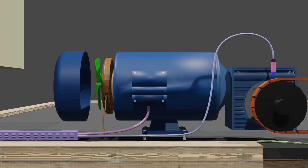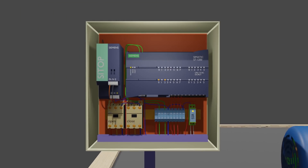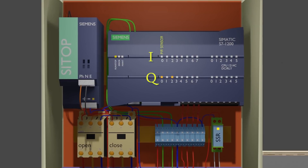Now let's see the PLC wiring. We have connected the PIR sensor at I0.0, the count sensor at I0.1, the brake coil at Q0.0, the door open contactor at Q0.1, and the door close contactor at Q0.2.